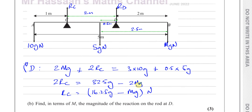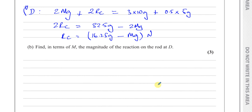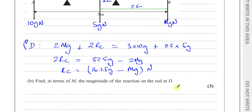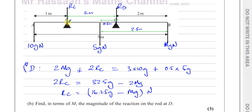Now we want to find the magnitude of the reaction force at D, again in terms of M. We could take moments about C this time, which would eliminate RC and leave us with RD. But there's something a lot easier we can do.